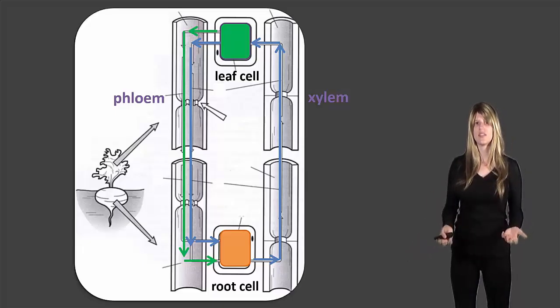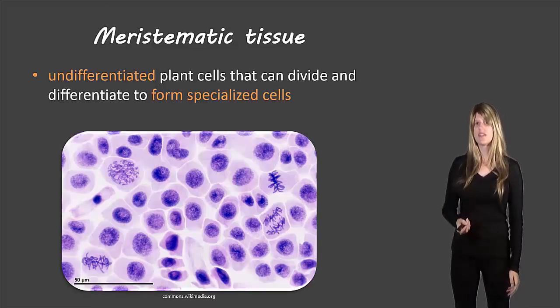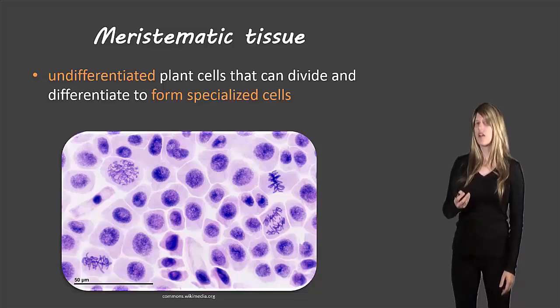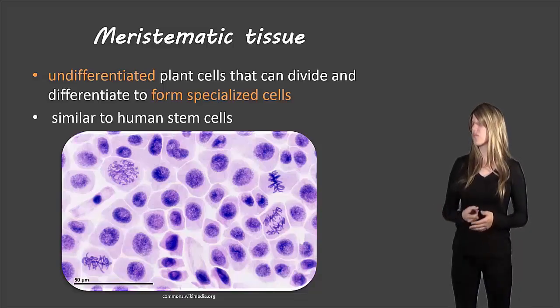The next type of tissue is meristematic tissue, and these are undifferentiated plant cells. They can divide and differentiate to form specialized cells, and these are very similar to human stem cells.